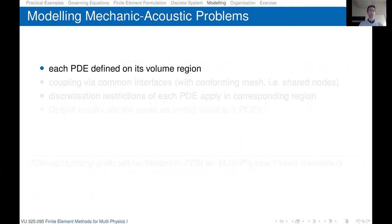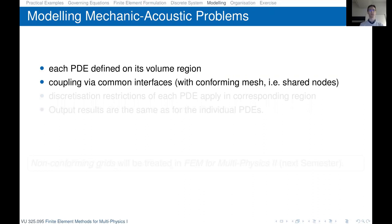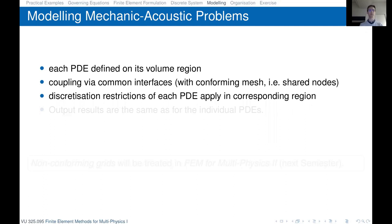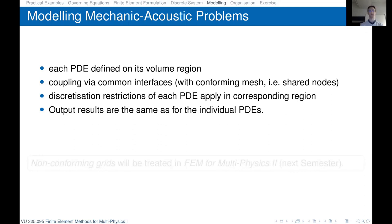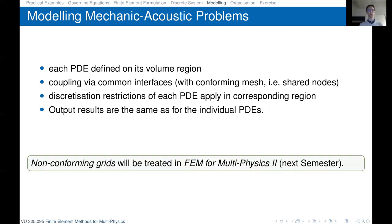When modeling mechanic-acoustic problems, each PDE is defined on its own volume region. The coupling is realized via the common interface, which requires a conforming mesh — shared nodes at the interface. Discretization restrictions of each PDE must be obeyed in the corresponding region, and the mesh must match at the common interface. There is also a non-conforming grid technique for coupling domains without a conforming mesh, which will be treated in the next course.